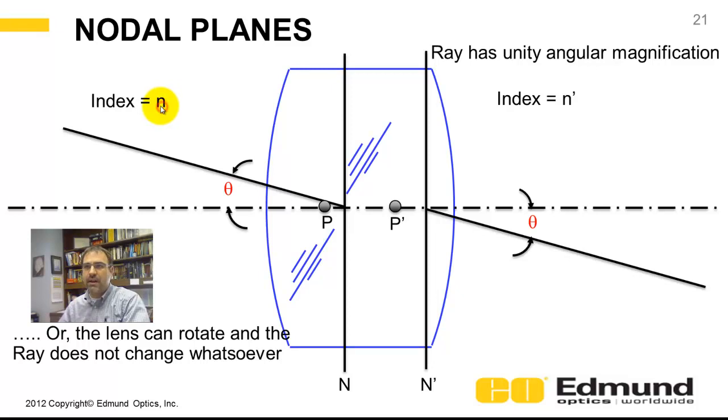We'll say it's a generic index n, and the back index is n'. If you have a ray, this would be your chief ray that goes through, goes into this nodal point.